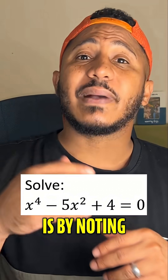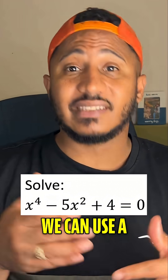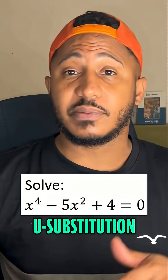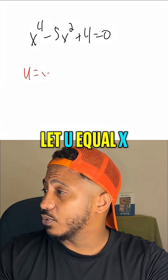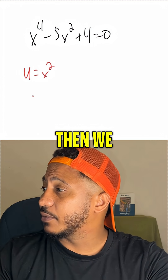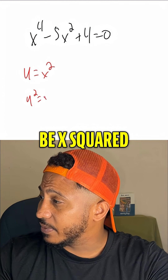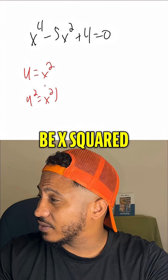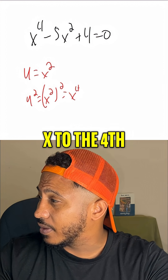So how we solve this one is by noting that we can use a substitution, a u substitution. So u equals x squared. Then we know that u squared is going to be x squared squared, in other words, x to the 4th.